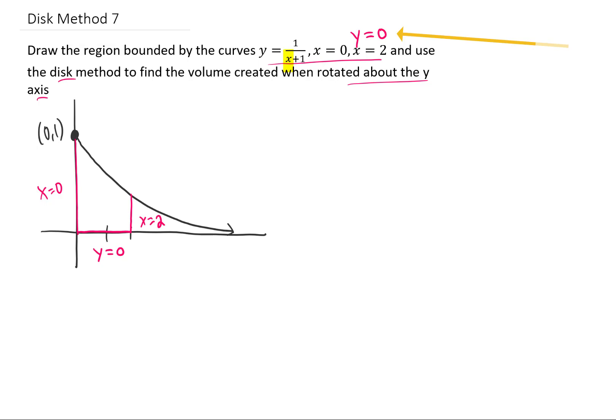So you'll see that there's an additional complication with this problem when using the disk method because you'll notice that up in this region here, the radius of our disk is given by the equation one over x plus one, and that is true for all y values above this dotted line right here.